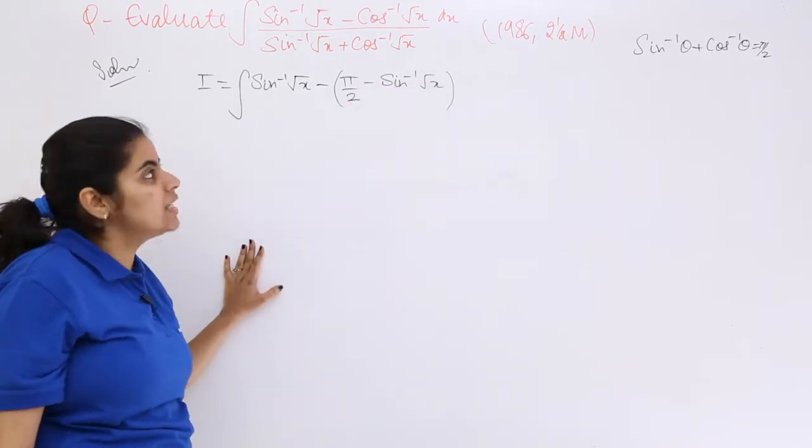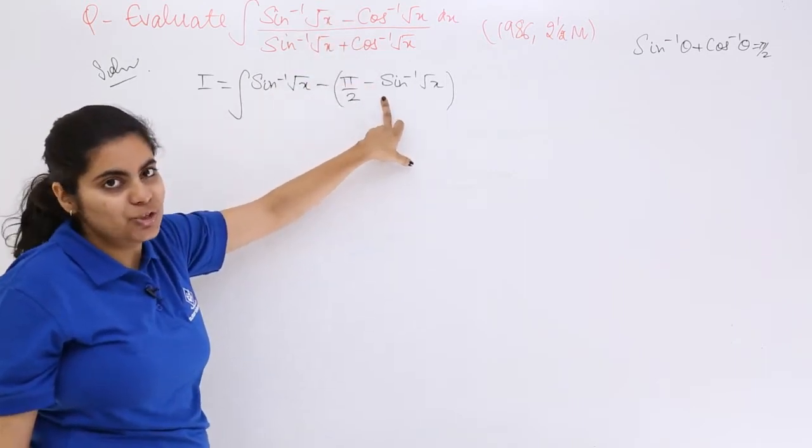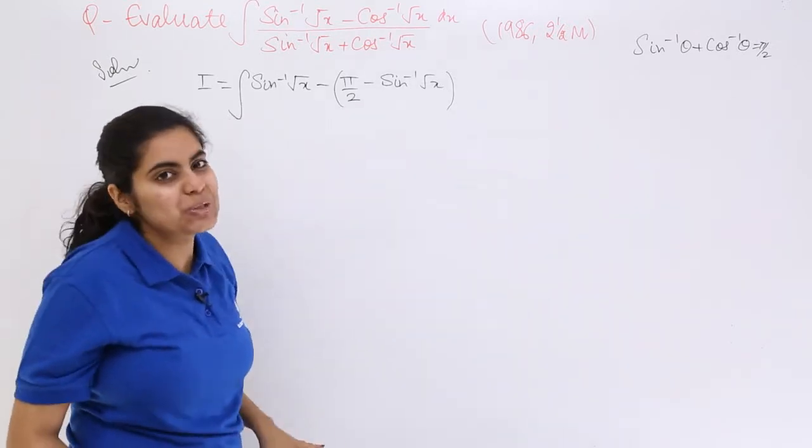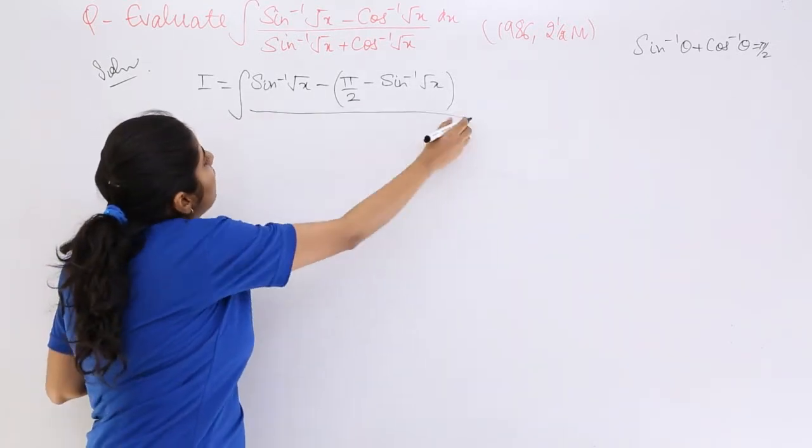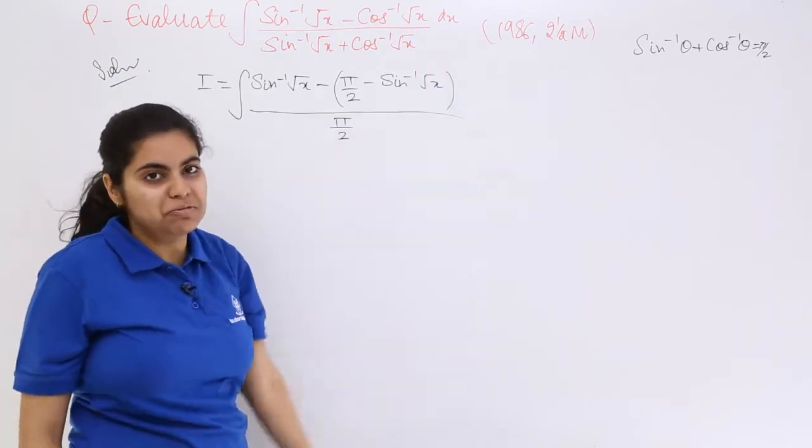What I have seen is that here it is sin inverse root x minus cos inverse root x, and cos inverse root x would be π/2 minus sin inverse root x. In the denominator it is π/2 because of the same formula.